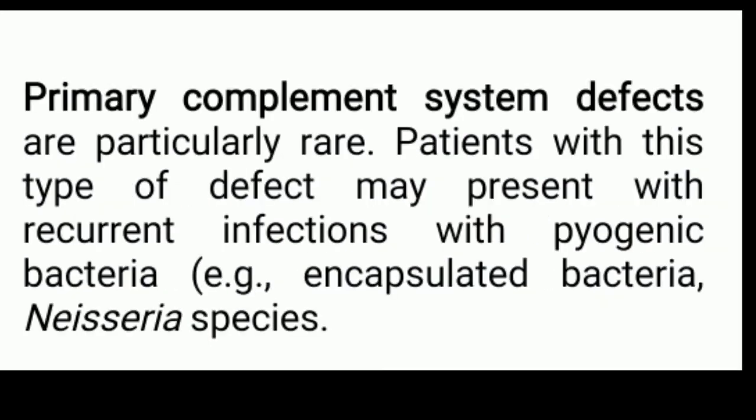Last is primary complement system defect. This defect is very rare and patients with this type of defect may present with recurrent infections, generally caused by pyogenic bacteria — meaning bacteria that generate pus — such as encapsulated bacteria and Neisseria gonorrhoeae species. So this was all about the factors influencing infection in humans. Thanks for watching.